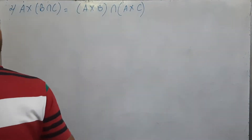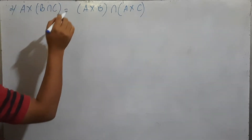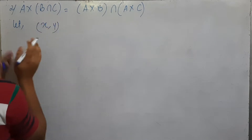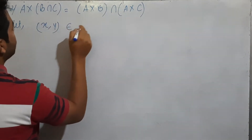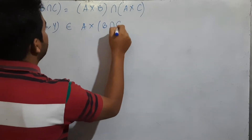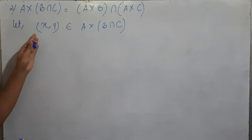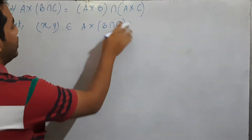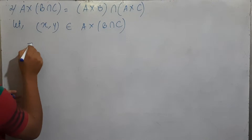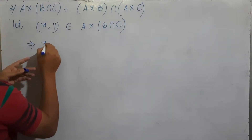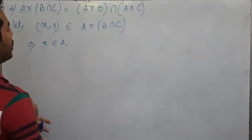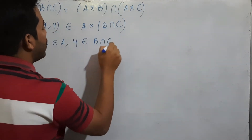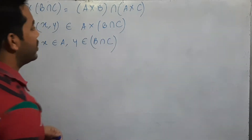The proof tool is equivalent to the proof tool. In this case, we are going to see X, Y as a Cartesian product. X is equal to 1 and Y will belong to A to B intersection C.